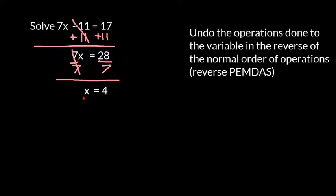So I'm proposing that 4 is the value of x which makes this true. I'm going to quickly check this by plugging 4 into my original equation. And I see that 7 times 4 is equal to 28, and 28 minus 11 is indeed equal to 17.